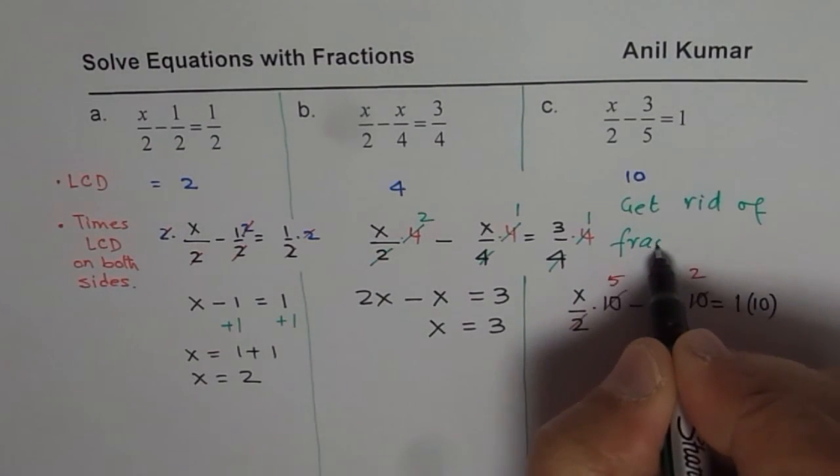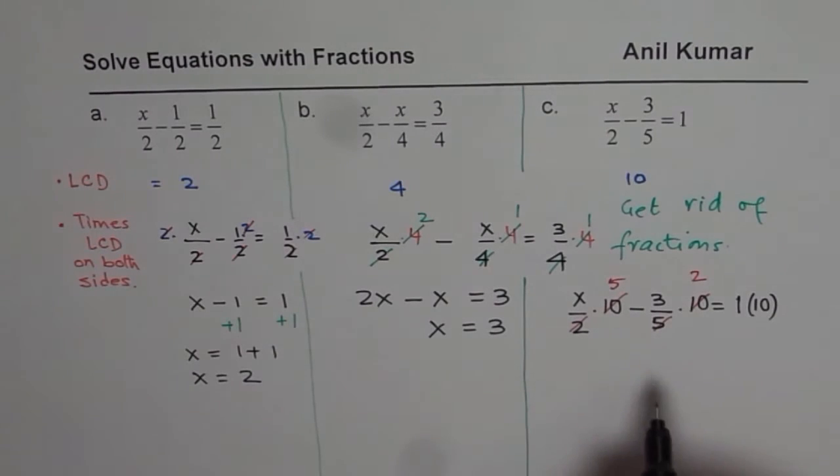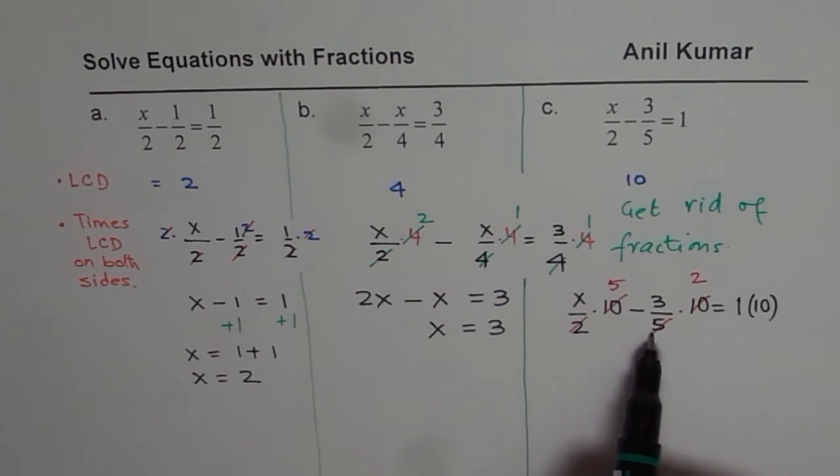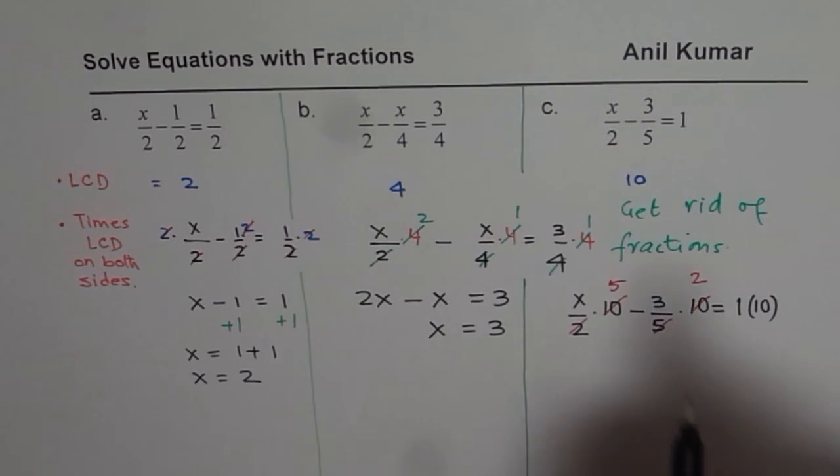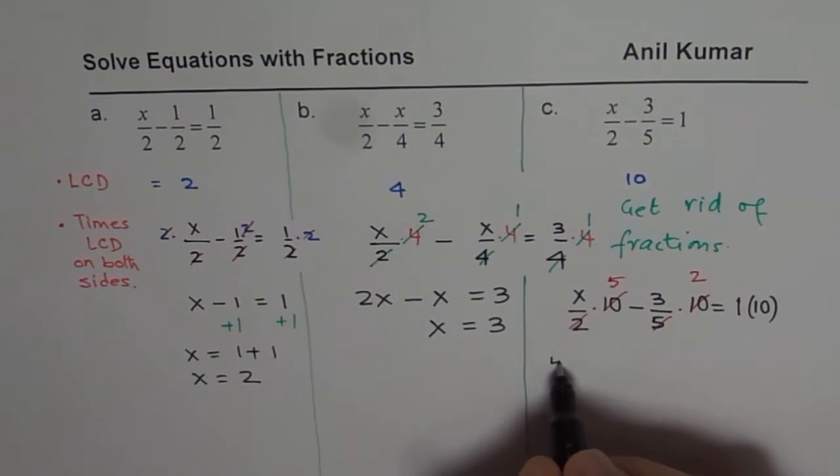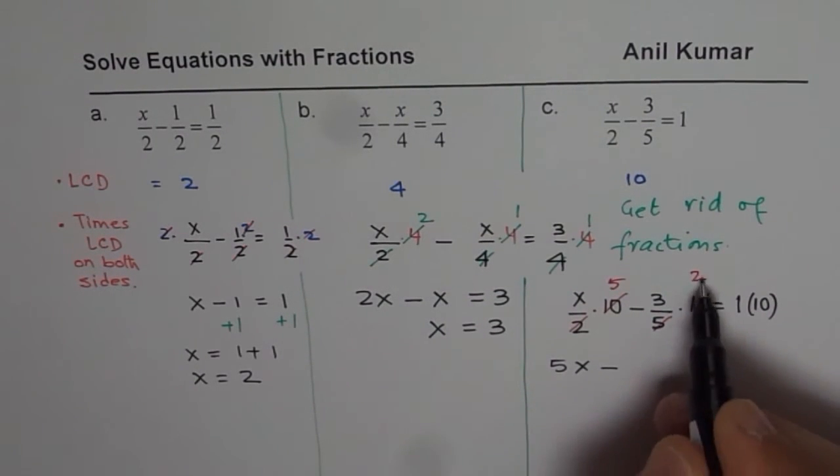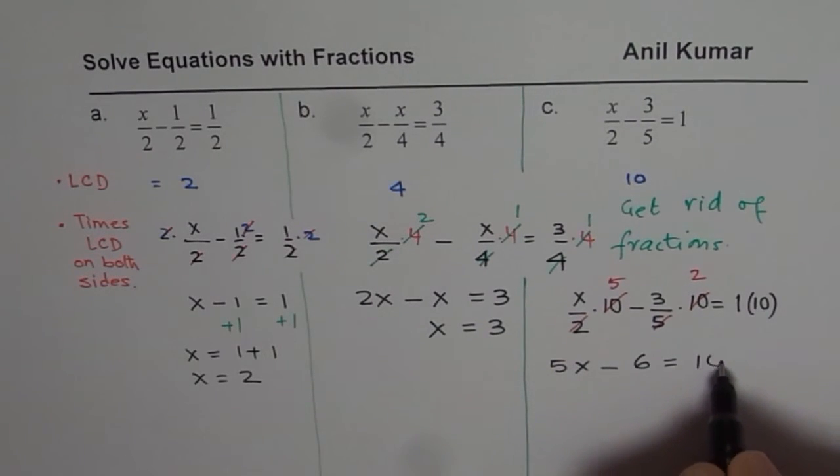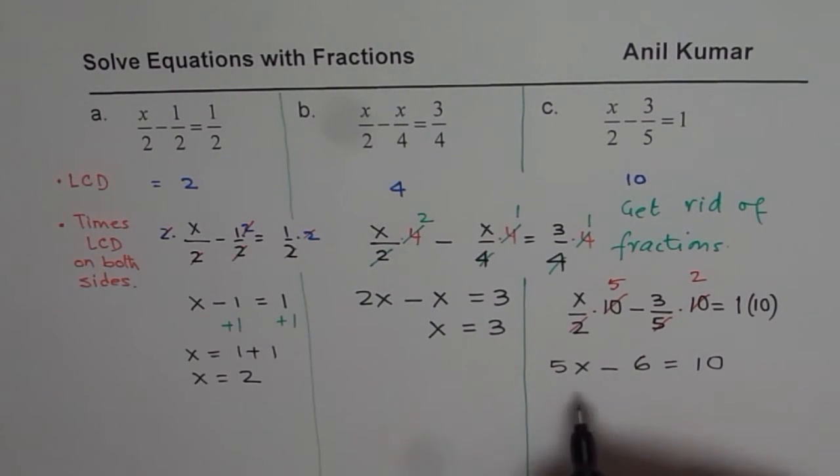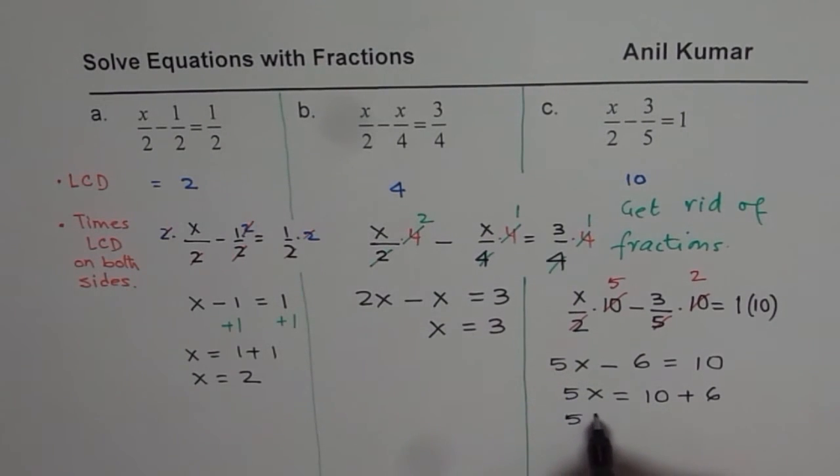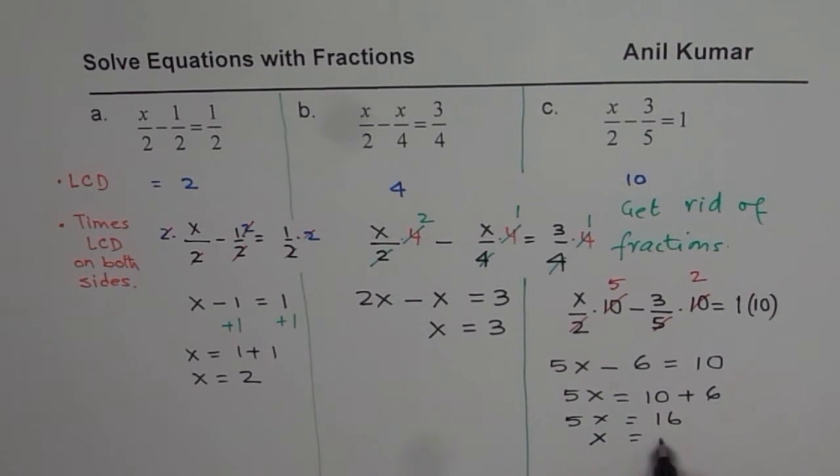To solve equations with fractions. So at this stage, fractions are no more there. You have 1 in the denominator. So you get 5 times x minus 2 times 3 is 6. Now you can add 6 on both sides. So you get 5x equals to 10 plus 6. And combine them. So you get 5x equals to 16. Or x equals to 16 divided by 5. So you can get answers in fractions also.